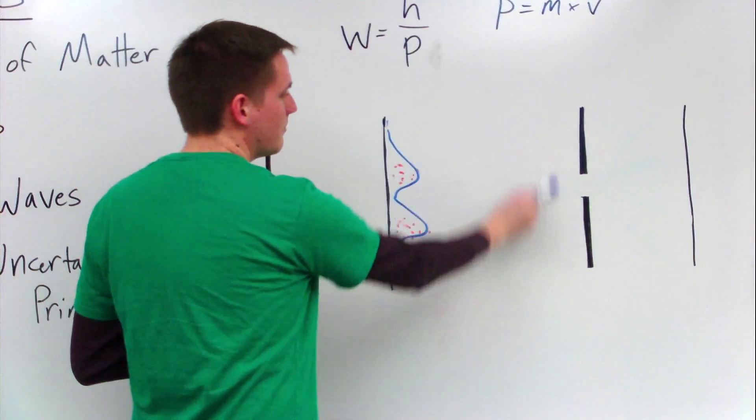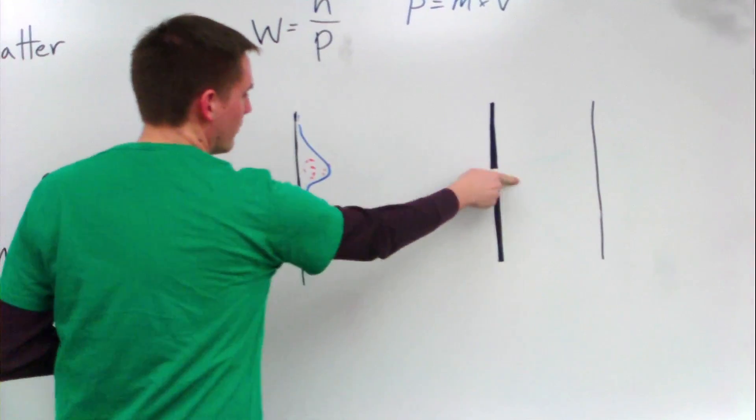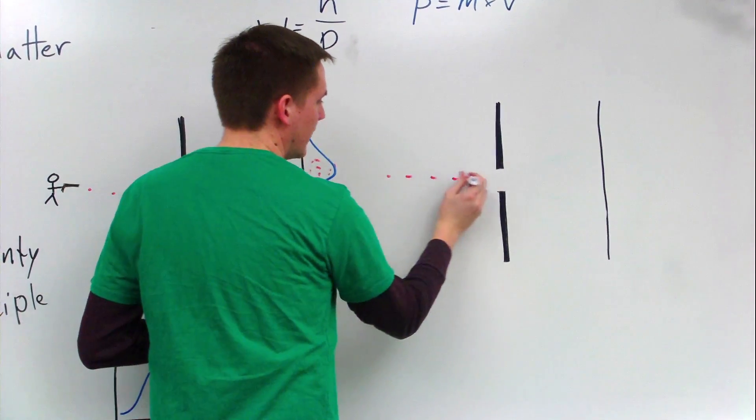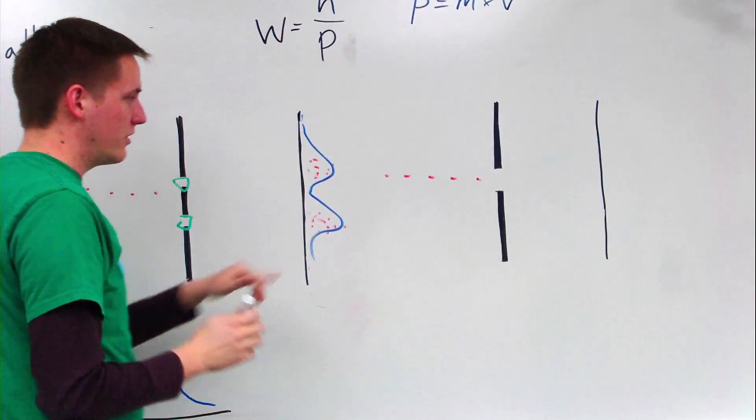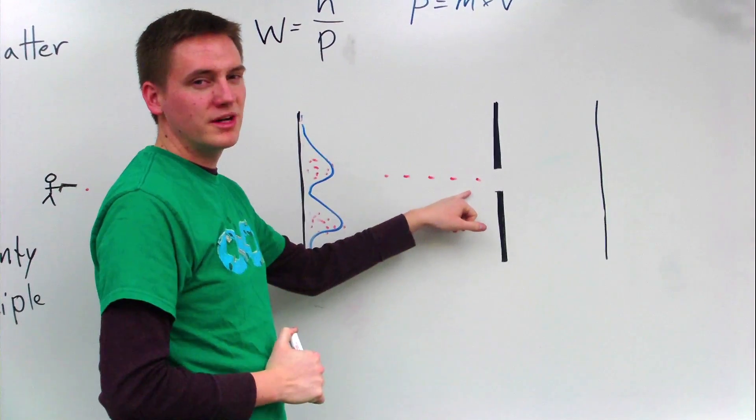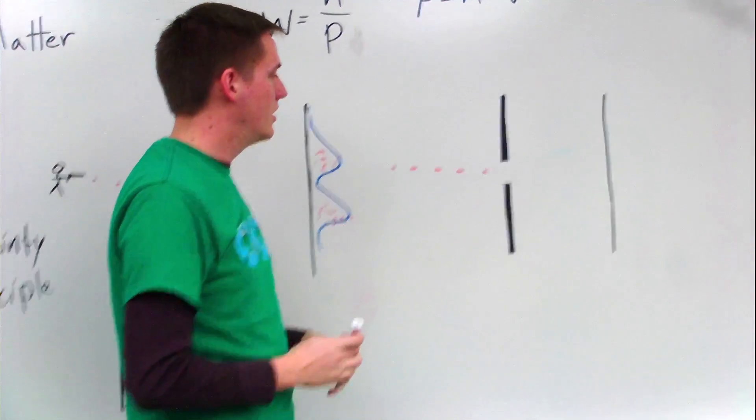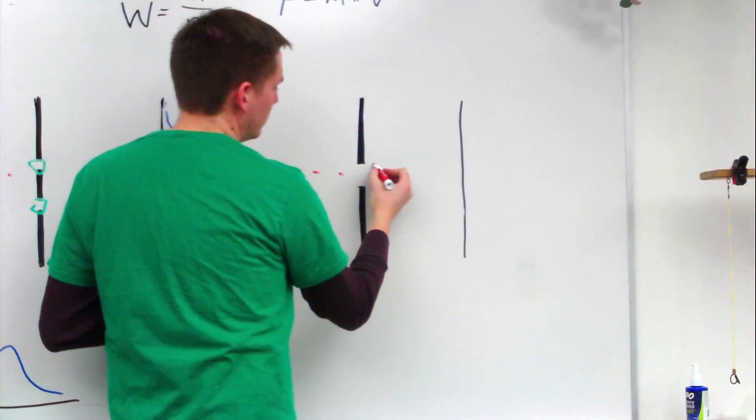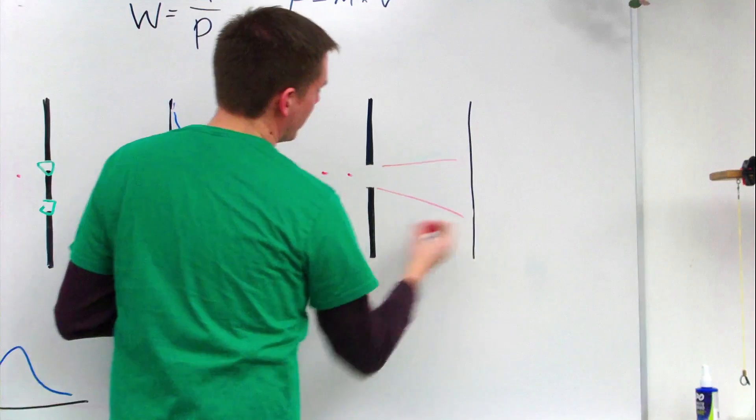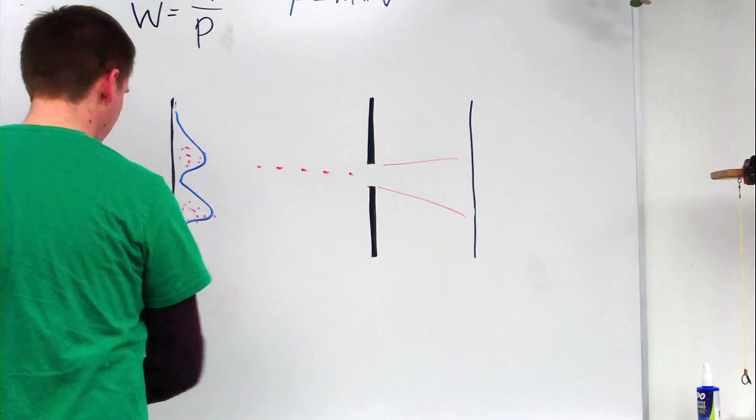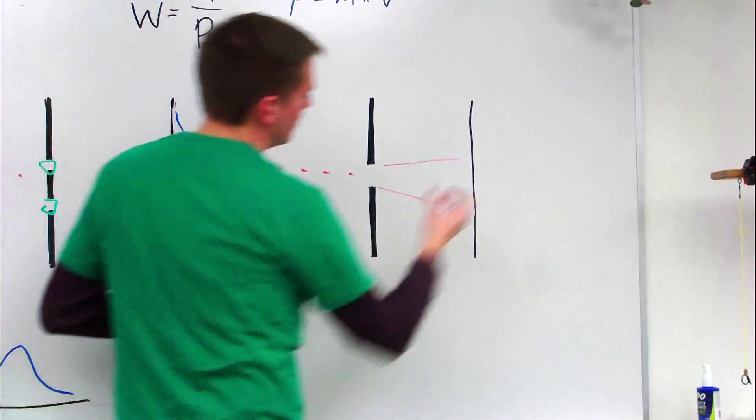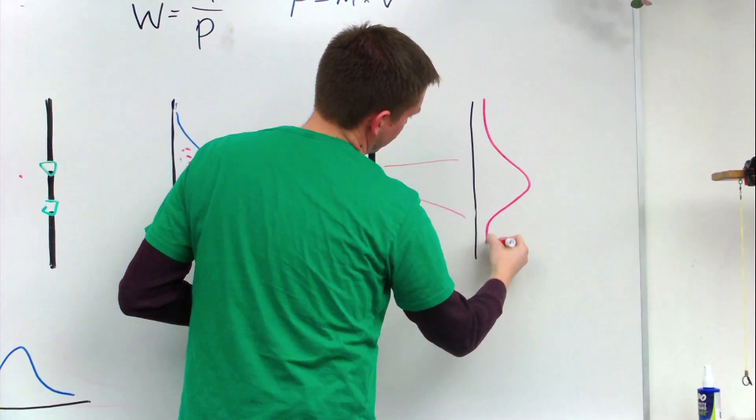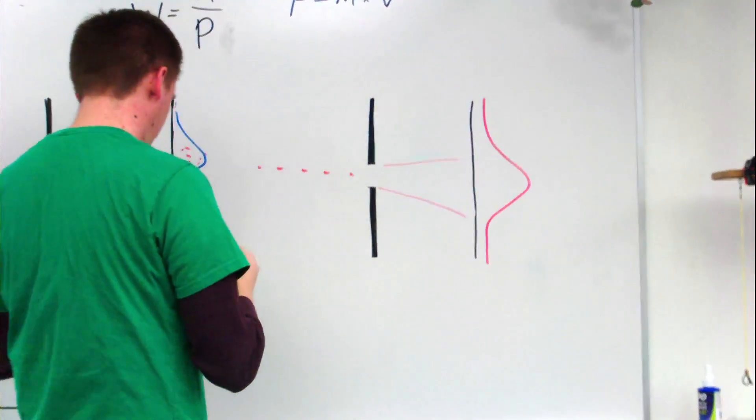So to prove that point, let's think about a wall over here where we have one slit. And we're going to shoot electrons through again like we did. And we know that since matter has properties of waves, it's going to diffract. So as it goes through, it will kind of spread out like that, and we can look at the probability curve as looking something like this. It's most likely to land in this area.